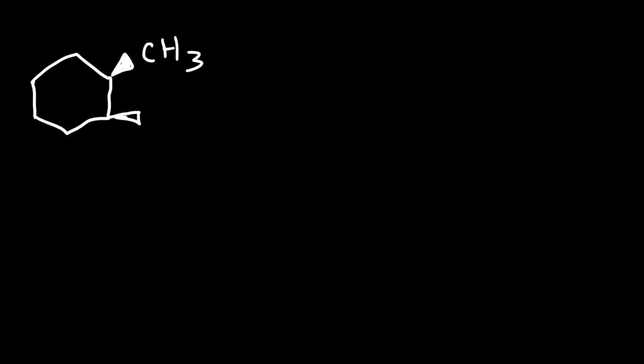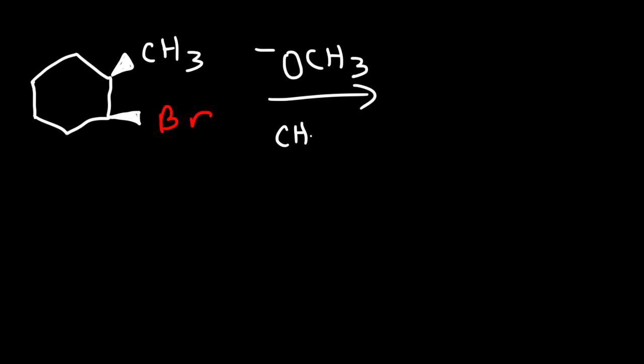In this video, we're going to go over the stereochemistry of the E2 reaction. Let's start with this example. Let's say we have 1-bromo-2-methylcyclohexane, and let's say that these two groups are cis with respect to each other. If we react this alkyl halide with methoxide dissolved in methanol, what is the major product going to be?